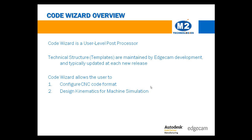The post-processor configuration changes are captured in the CodeWizard file, which can be easily updated at new software releases. Edgecam's development team maintains the underlying templates that power CodeWizard. They add improvements and ability to use new software functionality at each release. One of the great things about CodeWizard is that user modifications are not lost when the template is updated.